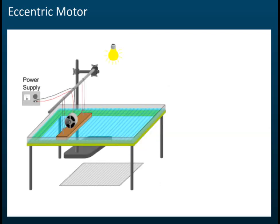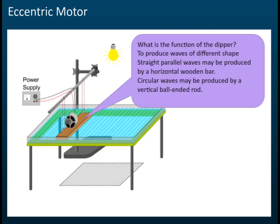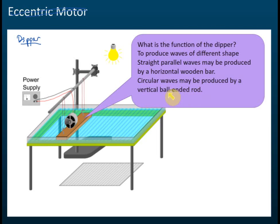Another thing you need to know is about the dipper. The function of the dipper is to produce waves of different shapes. If you want to produce a straight plane wave or straight parallel wave, you use a horizontal wooden bar. If you want to produce a circular wave, you use a ball and rod — what I called the bob.